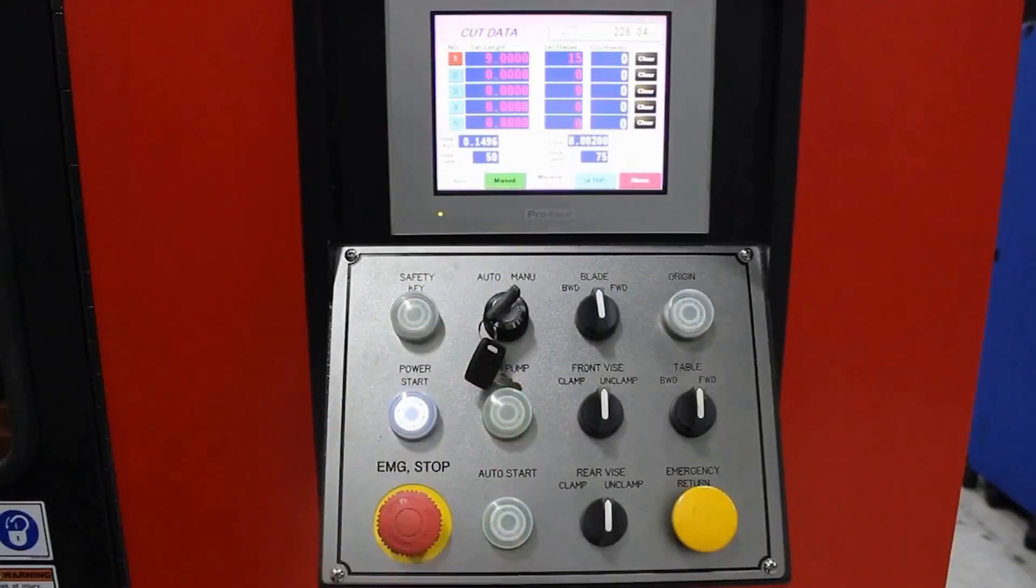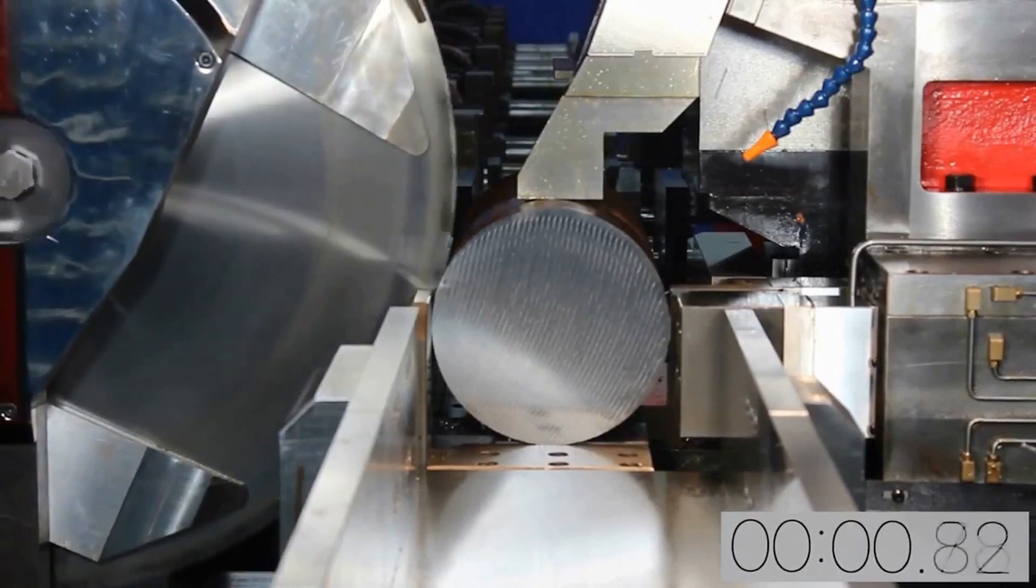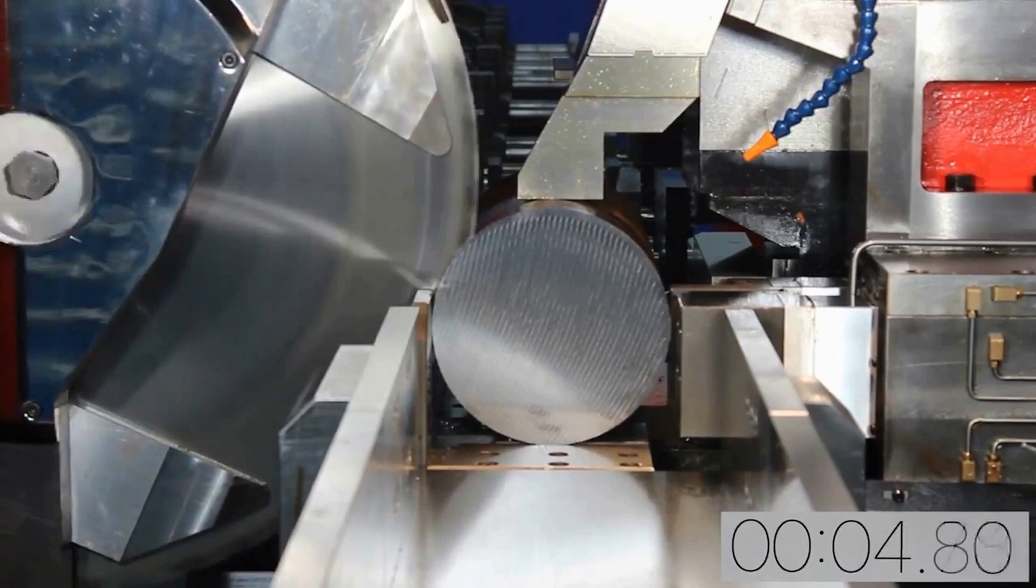A press of the cycle start button starts the production run. The large diameter blade cuts easily through this 1045 steel in about 46 seconds.